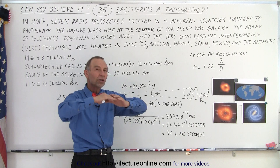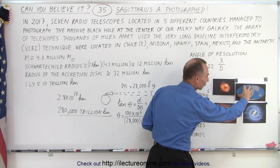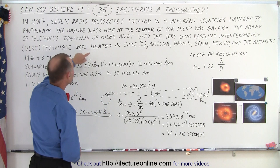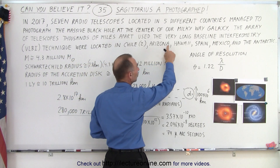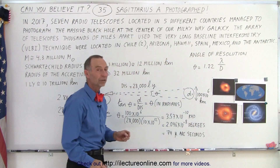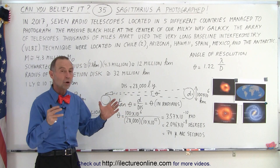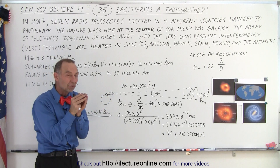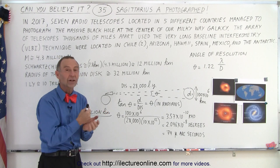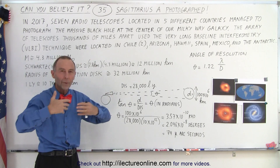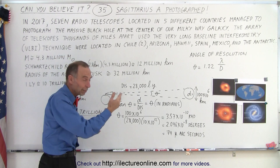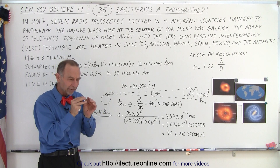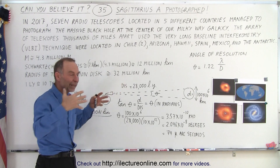Here is the picture of the black hole. What they did was use an array of radio telescopes spread out over a vast region of the world — five different countries. Two were located in Chile, one in Arizona, one in Hawaii, one in Spain, one in Mexico, and one in the Antarctic. Together, those seven telescopes pointed to the center of the Milky Way galaxy and recorded the radiation coming from that very tiny region. They used radio telescopes to see through all the dust, and they used sub-millimeter waves — about 0.1 millimeter waves in the microwave range.